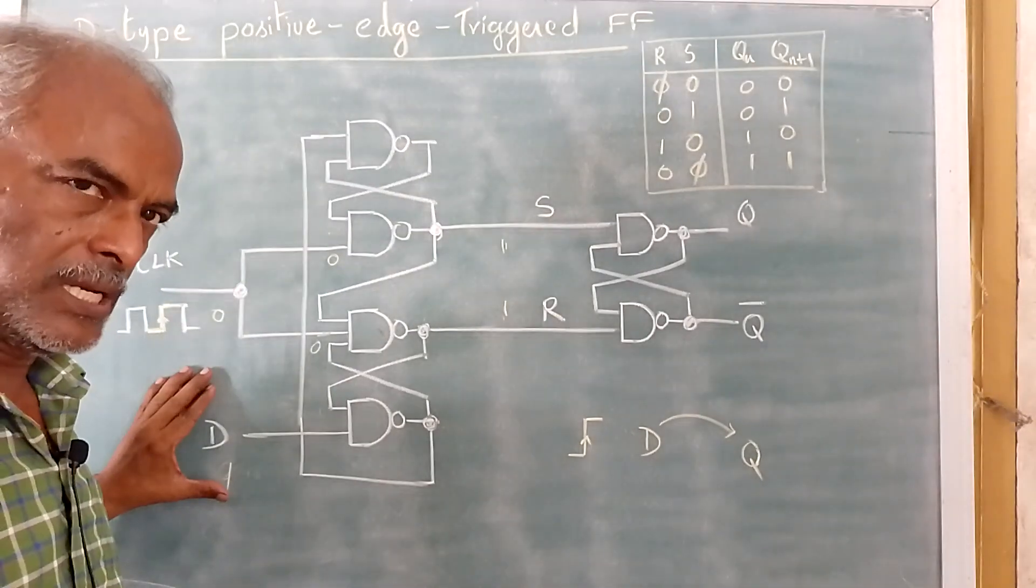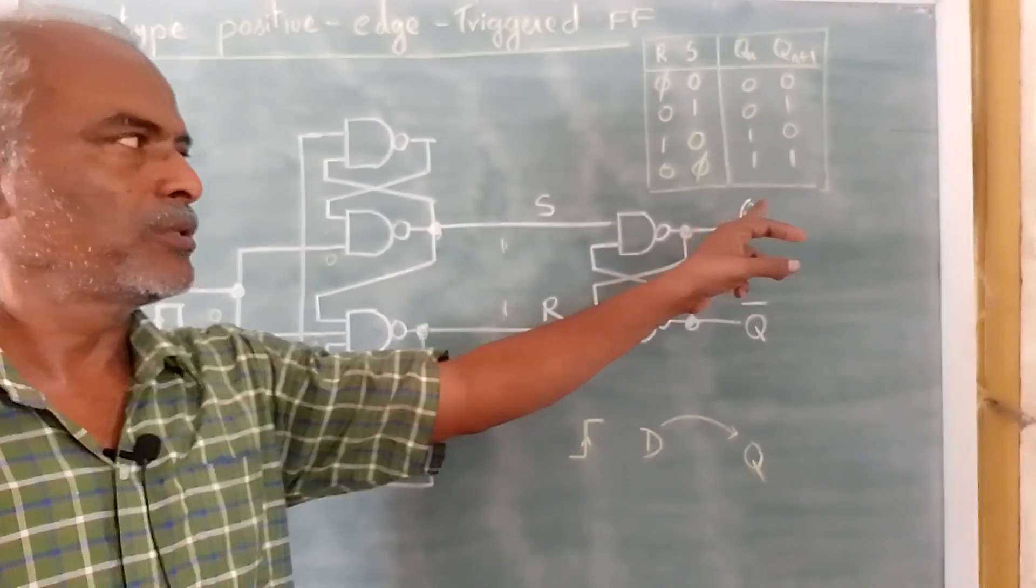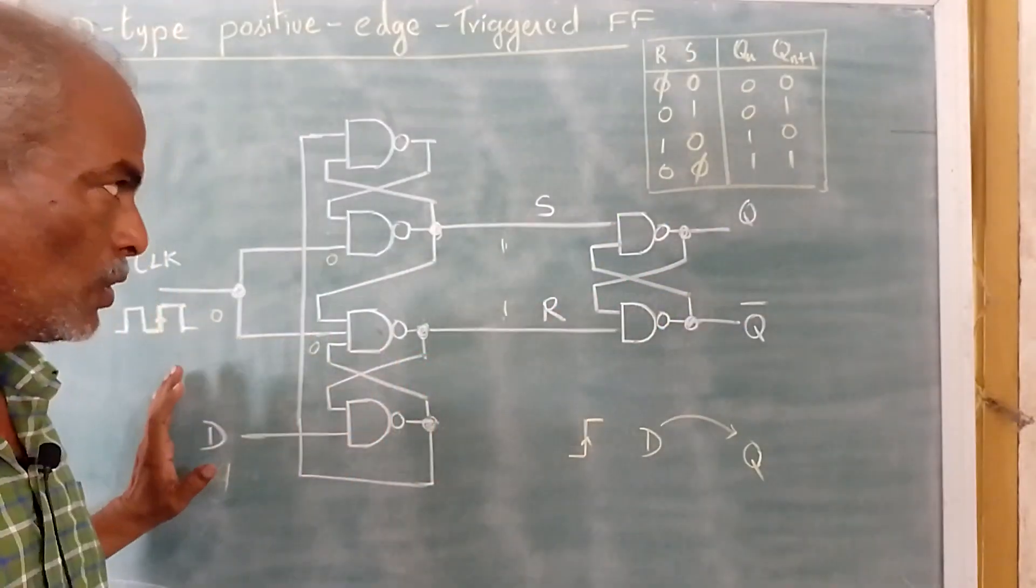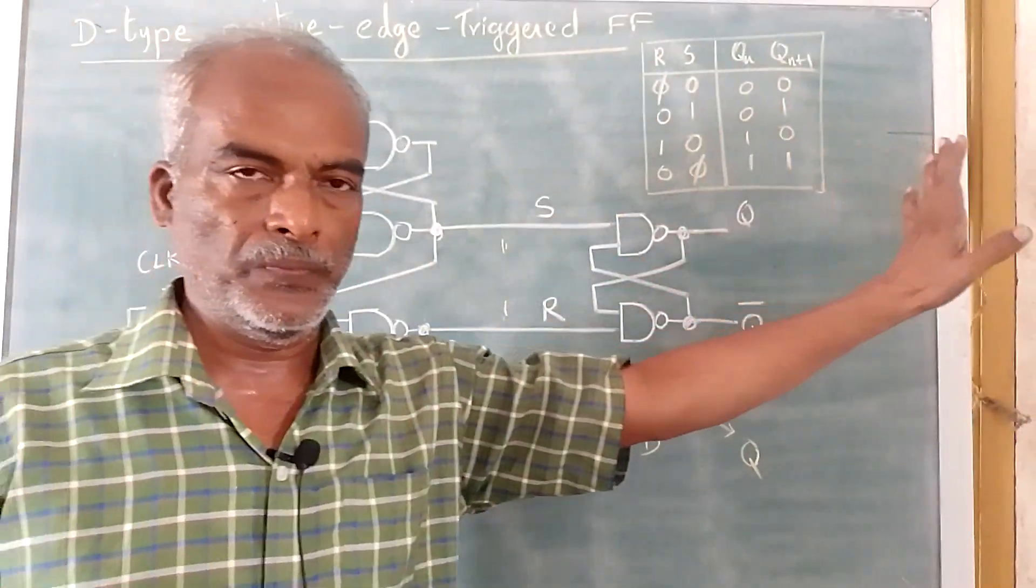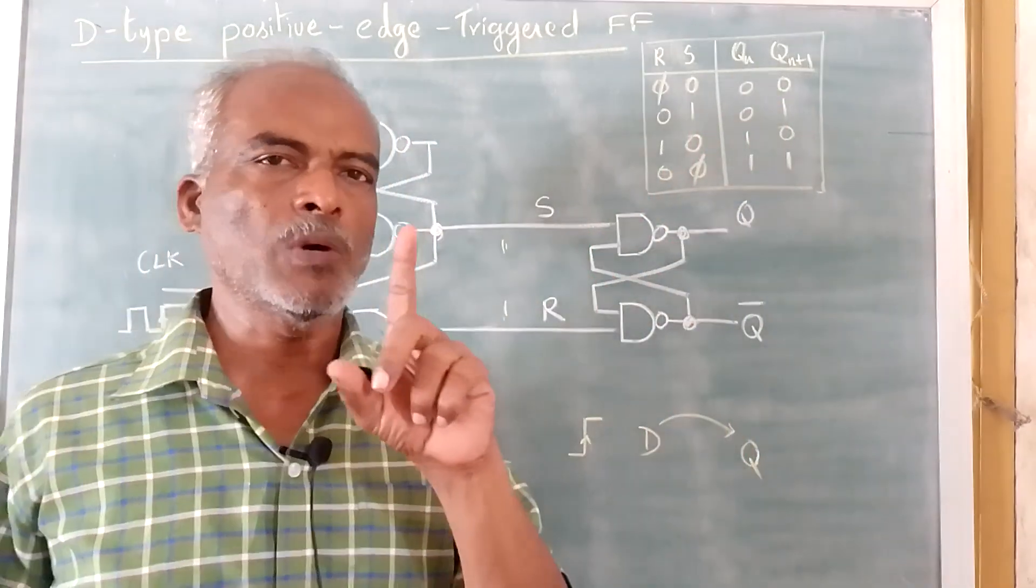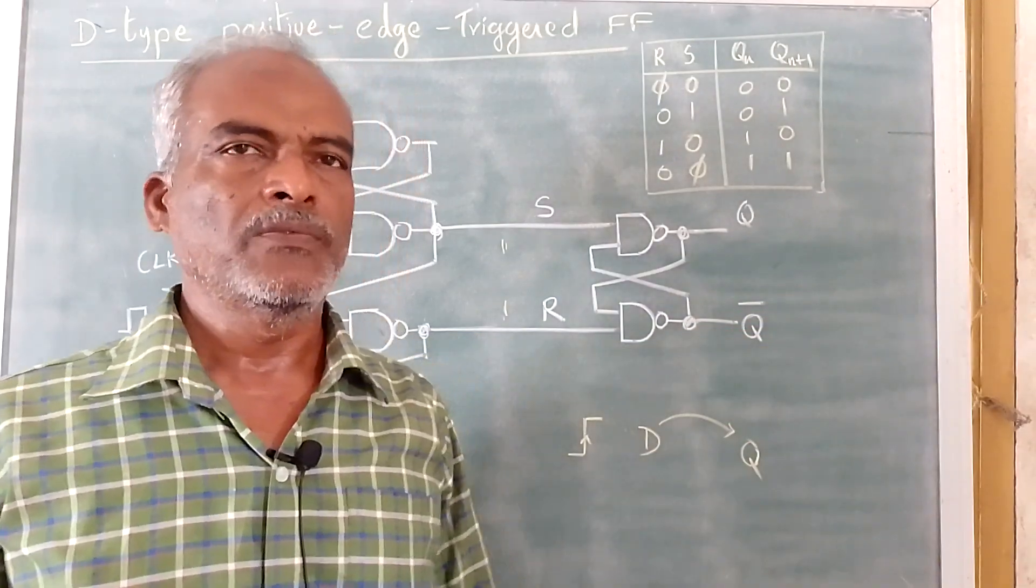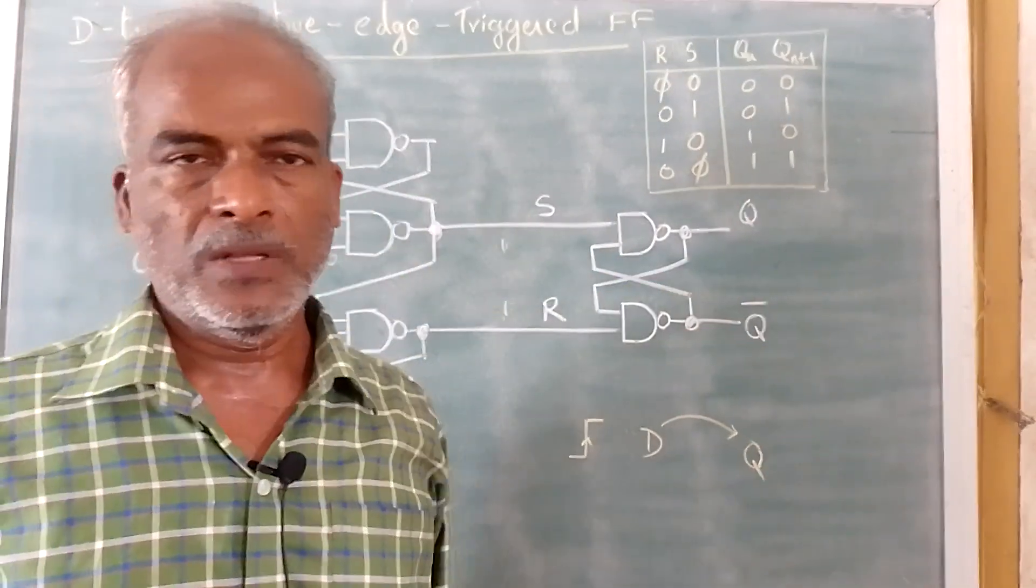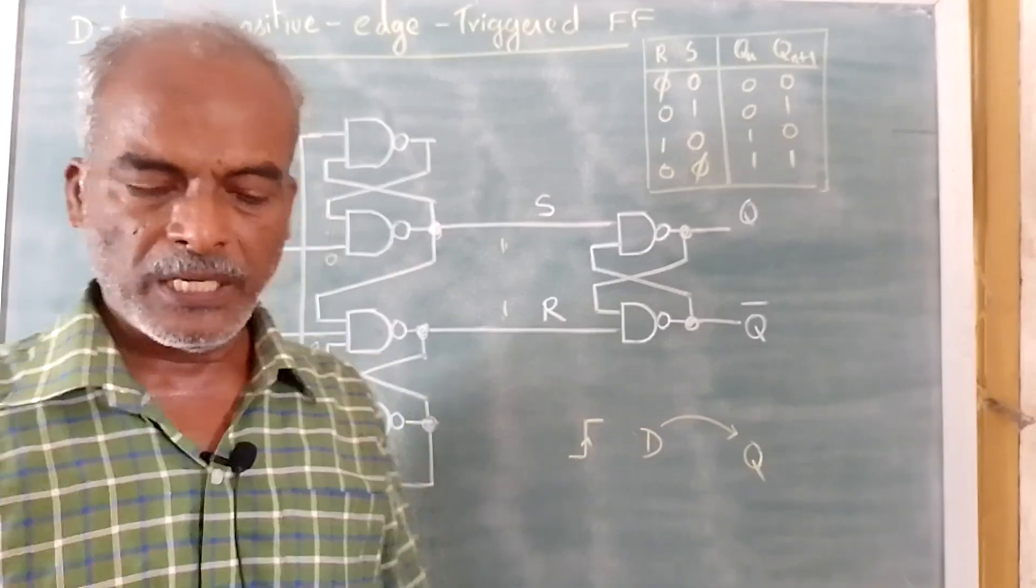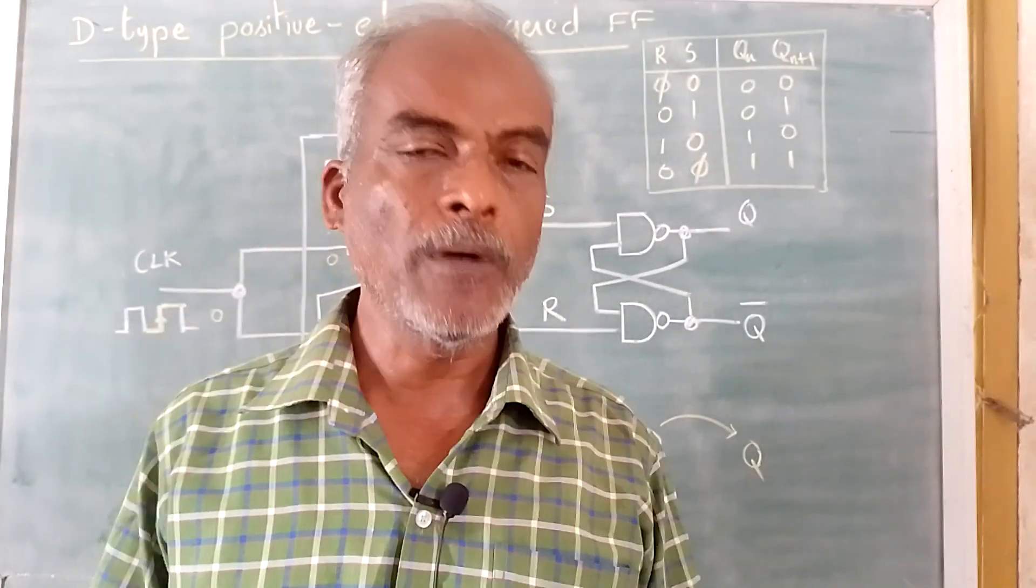whatever input at D, if it is 1, the output is going to be 1. If it is 0, the output is going to be 0. That means the whole block introduces one bit delay and the output is appeared from the input to the output. So that's all about the working principle of D-type positive edge triggered flip-flop.